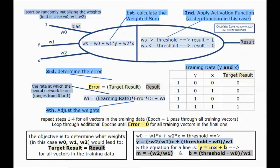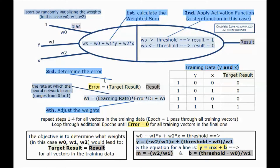This issue is solved by adding a bias — a third input equaling 1 with a weight of w0. So ws will equal w0 plus w1 times y plus w2 times x. If ws is bigger than the threshold, the result will be 1; otherwise it will be 0. The objective is to determine what weights w0, w1, and w2 lead to the target result equaling the result for all vectors in the training data.